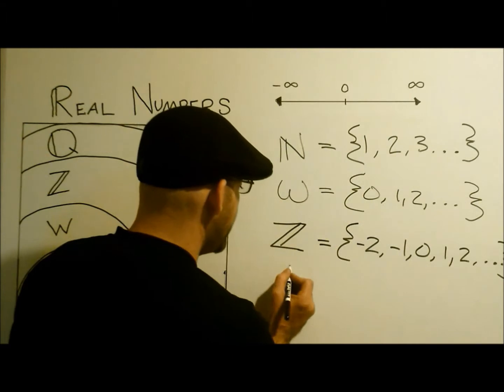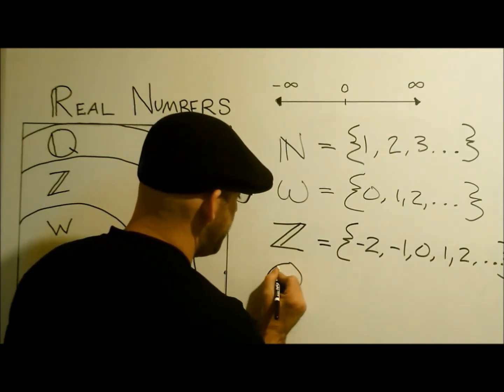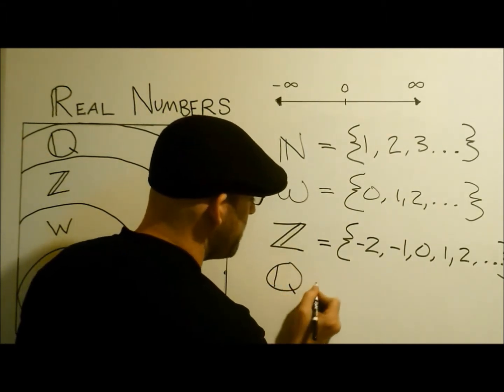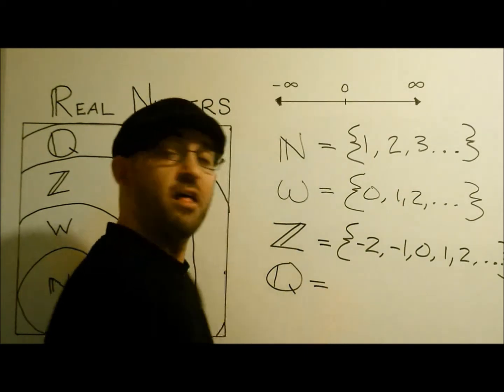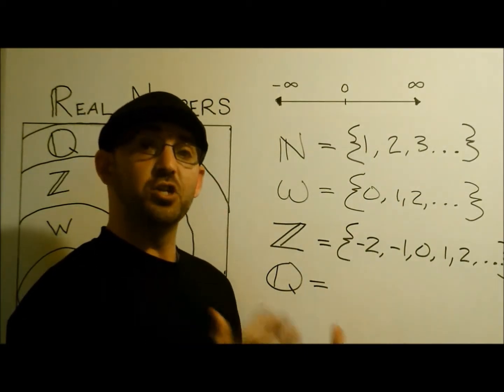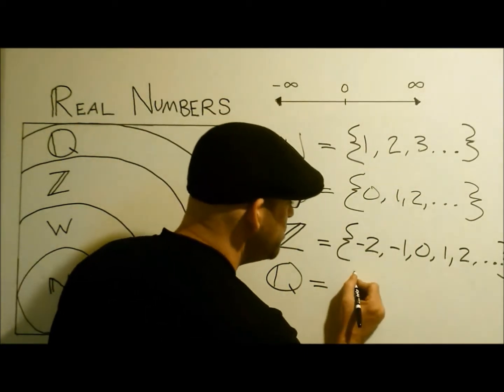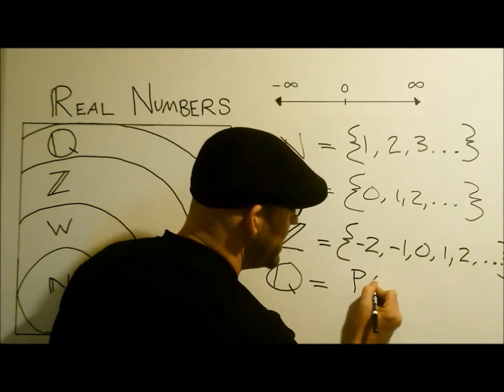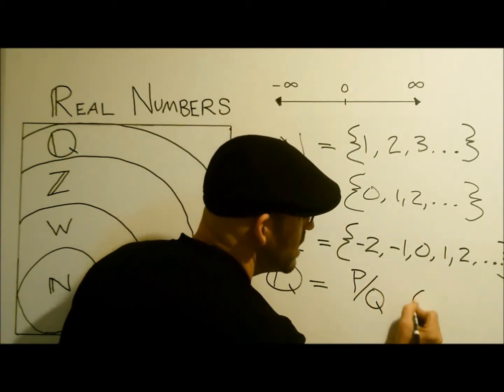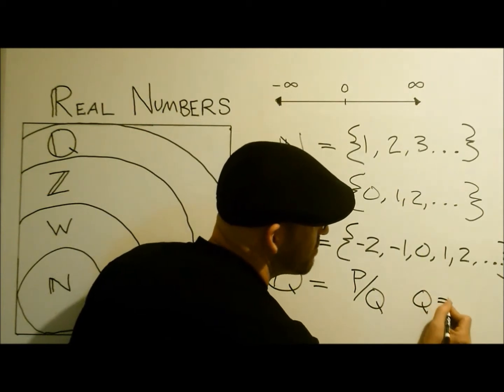Well, this is signified by the large Q for quotient, and we call them rational numbers. They are a ratio of two integers, and we usually see them as P over Q, where Q does not equal zero.